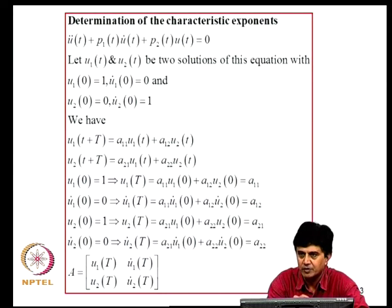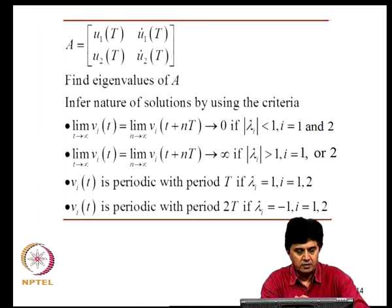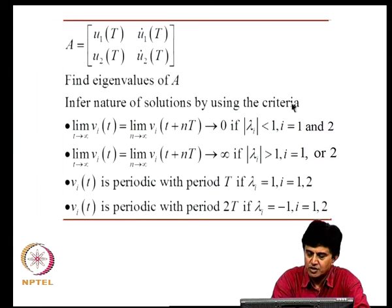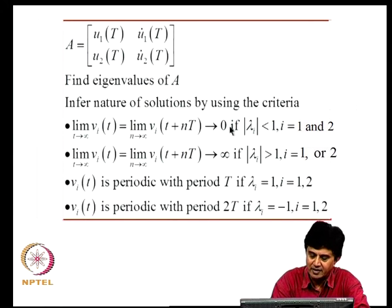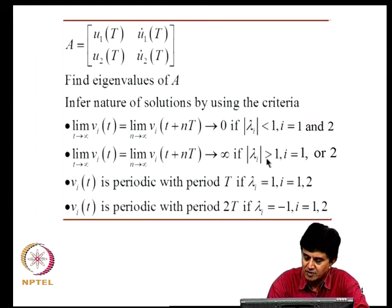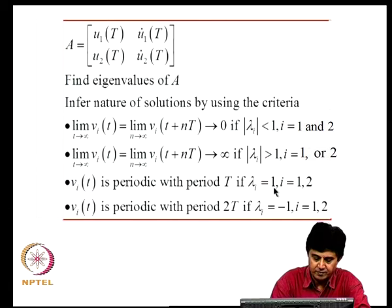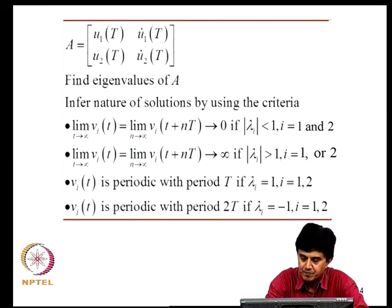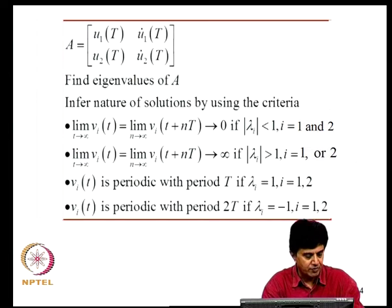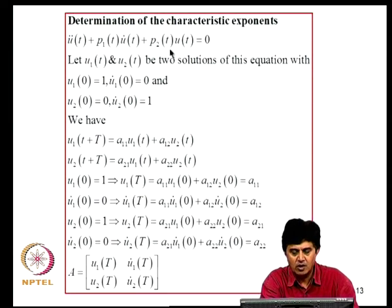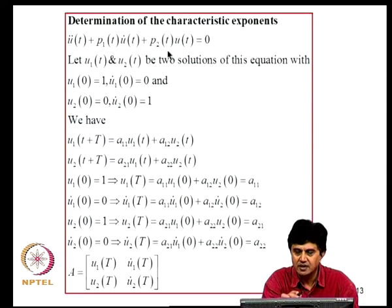If |λᵢ| < 1 for i = 1,2 the solution decays; if |λᵢ| > 1 for any i the solution goes to infinity; if both λᵢ = 1 it is periodic with period T; if both λᵢ = -1 it is periodic with period 2T. This completes the calculation of Floquet coefficients by simple integration. You can formulate a finite element model and use numerical methods to integrate the equation over one period of parametric excitation.